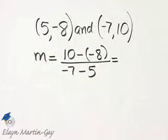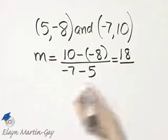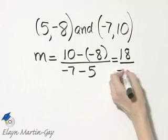10 minus a negative 8, that's 10 plus 8, or 18, over negative 7 minus 5, that's negative 12.